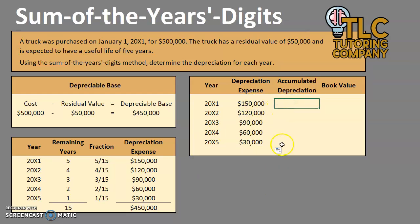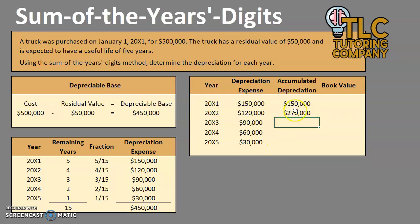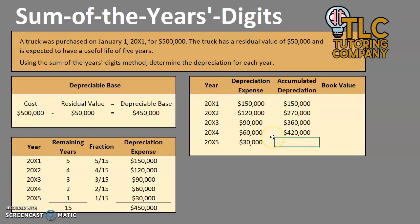For accumulated depreciation in year one, since it's the first year we just depreciated $150,000, so accumulated depreciation is $150,000. In year two, we take the $150,000 balance from last year and add the new amount, bringing us to $270,000. Year three: we started with $270,000 and added $90,000. Year four: started with $360,000 and added $60,000. In our last year: started with $420,000 and added $30,000.